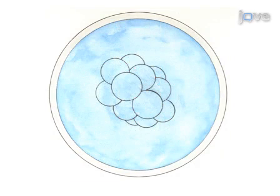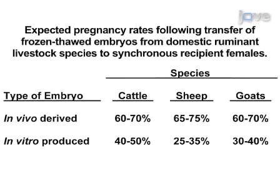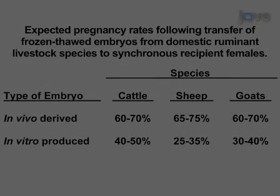The last step of the freezing procedure is to plunge the embryo into liquid nitrogen for short or long-term storage at minus 196 degrees Celsius. Ultimately, results can be obtained indicating that proper embryo dehydration prior to and during the cryopreservation procedure is critical.